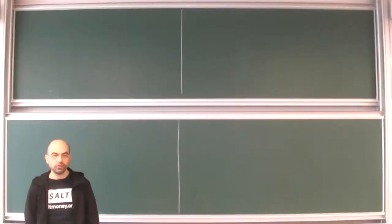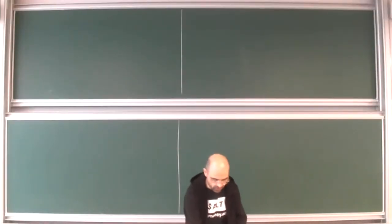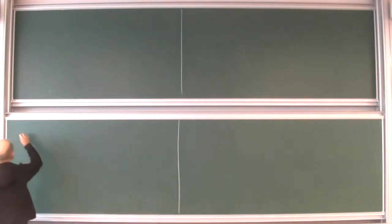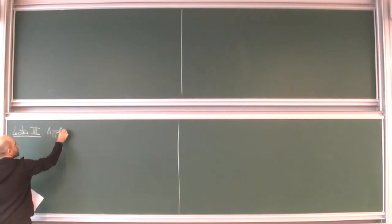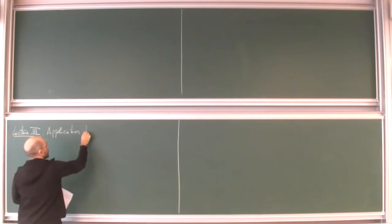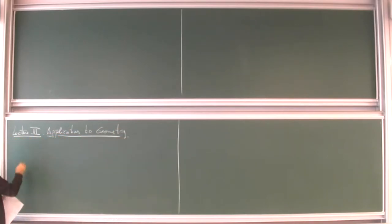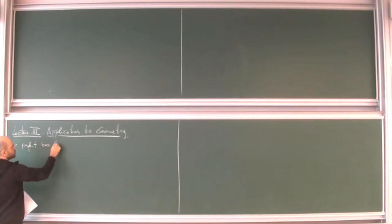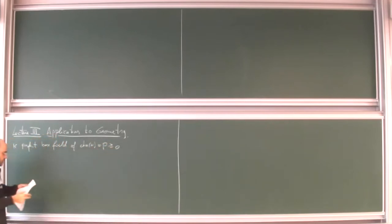Thank you so much, and thank you to all those who returned for this third and final lecture online and here at YashOS. This is lecture number three and the title is 'Applications to Geometry.' Let me recall what we have done so far. We have been working always with a perfect base field of characteristic p, p greater or equal than zero.